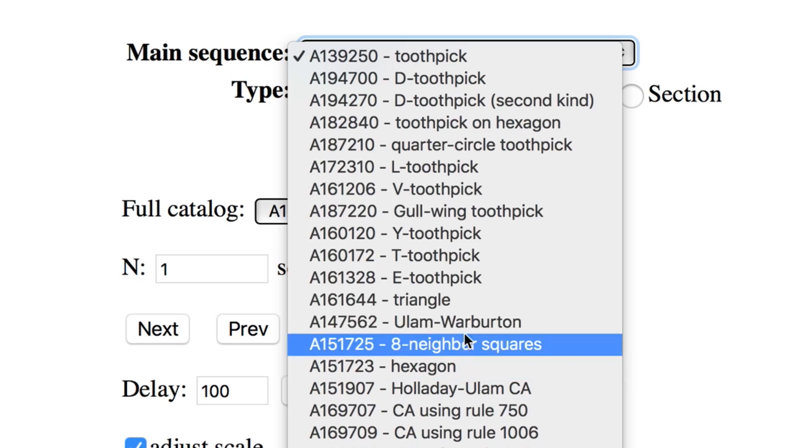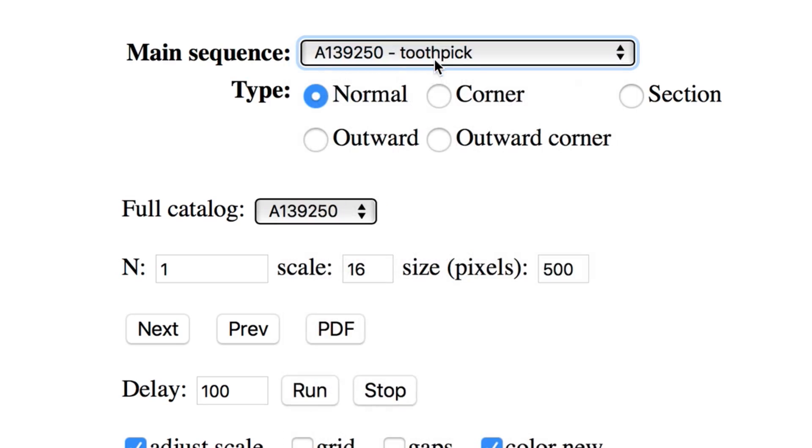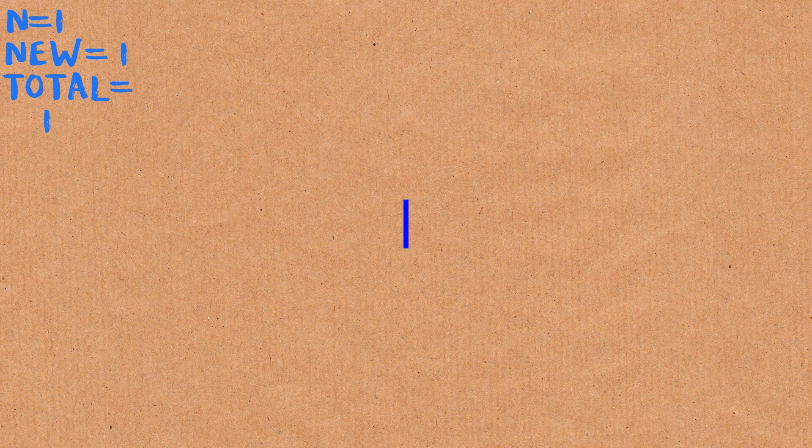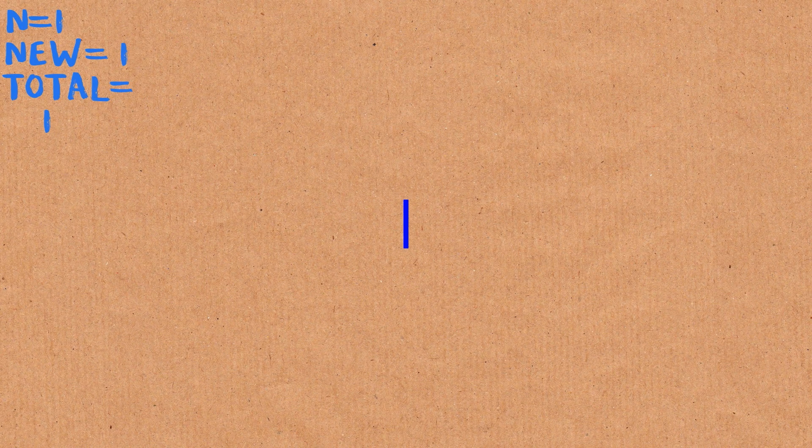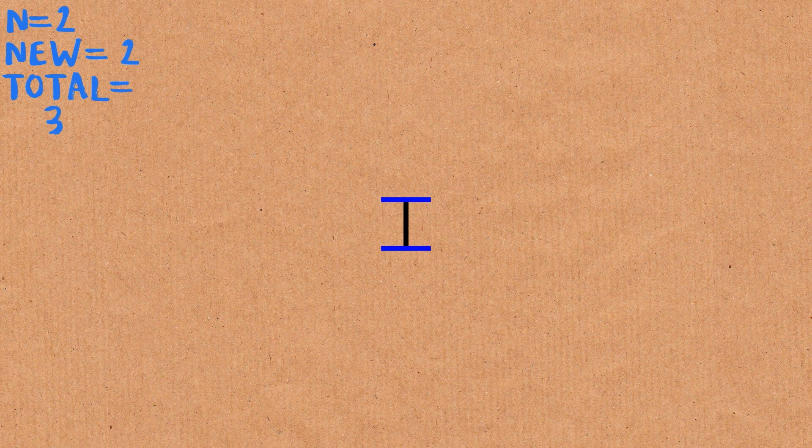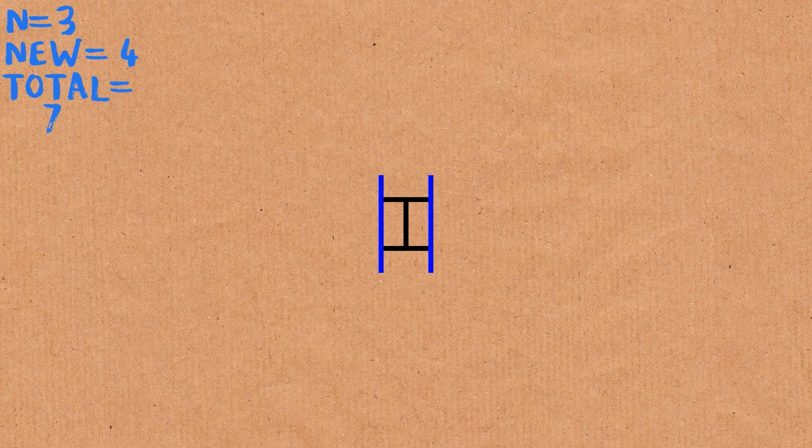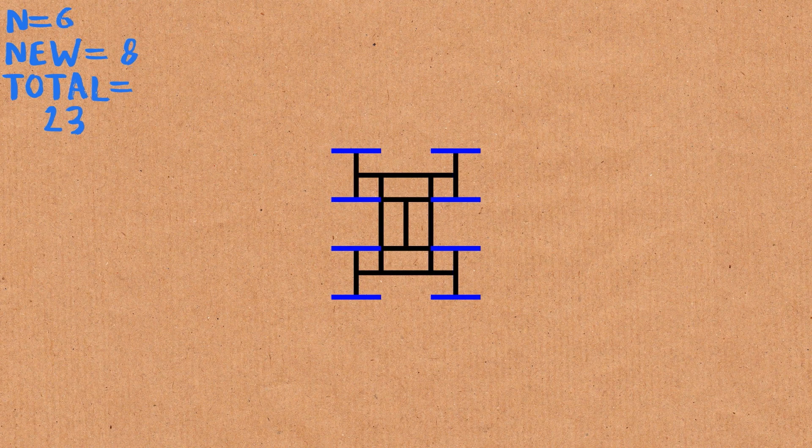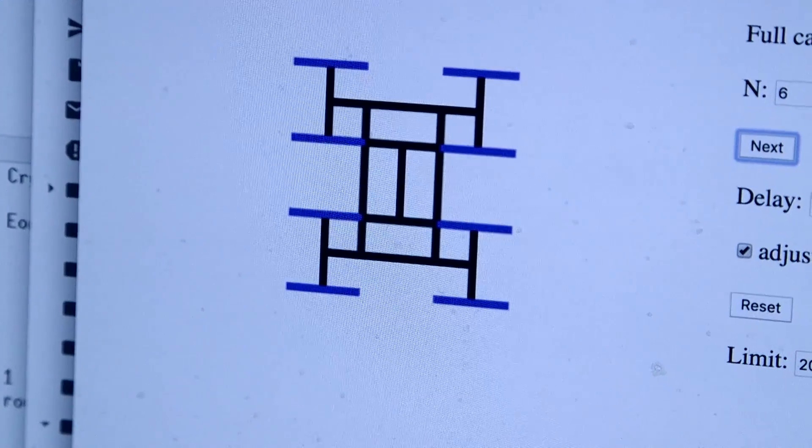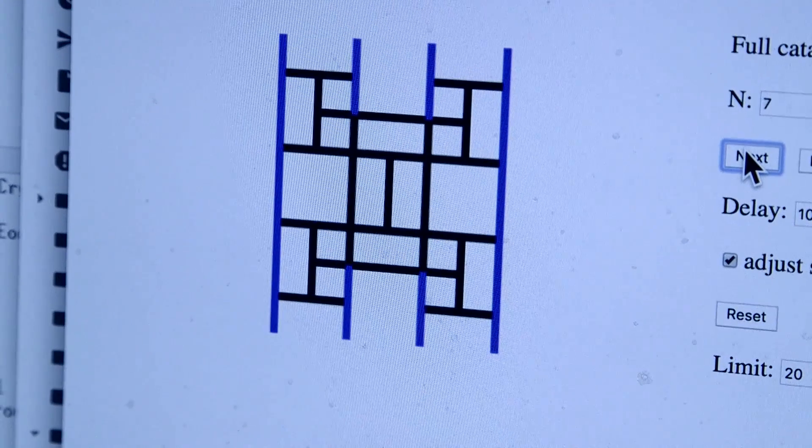Well, this is a very lovely question. Let me show you. David Applegate, my former colleague at Bell Labs, made an animation of this and a number of related sequences. There we see one toothpick. Next, we added two toothpicks. Next, next, this is where we got to. Now we're going to add eight. And now we have twelve free ends. We're going to add twelve toothpicks.